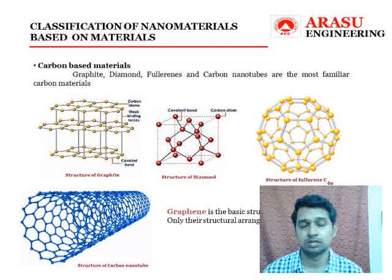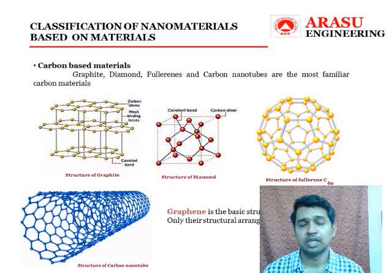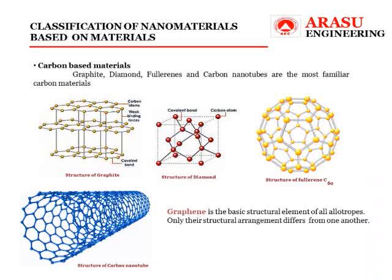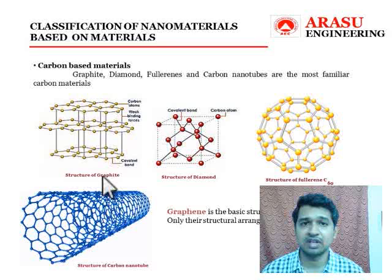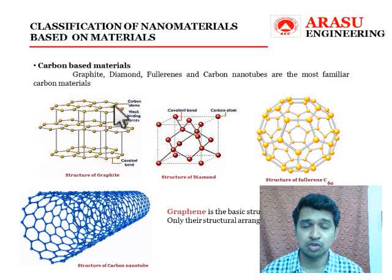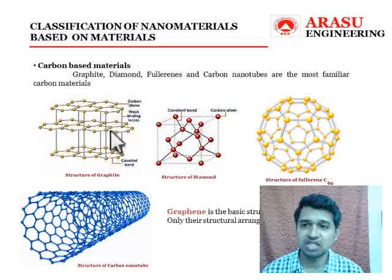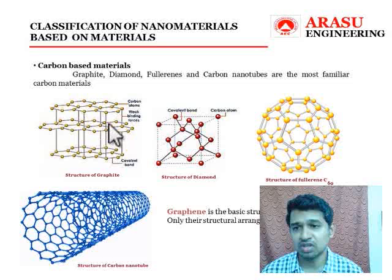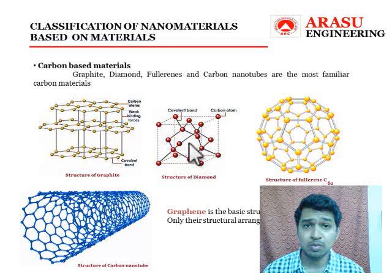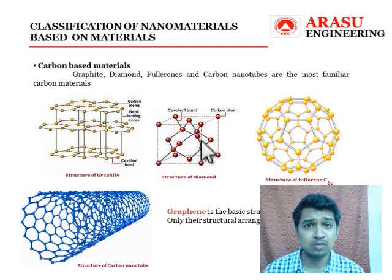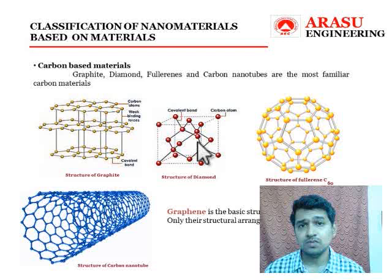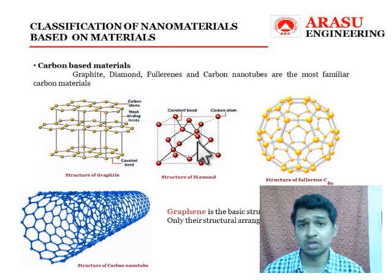The next classification is based on carbon materials. We have four familiar allotropes of carbon: graphite, diamond, fullerenes, and carbon nanotubes. Graphene is the basic element — only the structural arrangement differs. Graphite has a layered structure with strongly bonded atoms within each layer but weak bonds between layers, making it soft. Diamond has randomly distributed carbon atoms with no layered arrangement, making it very strong. This clearly shows that structural arrangement plays a vital role in defining material properties.